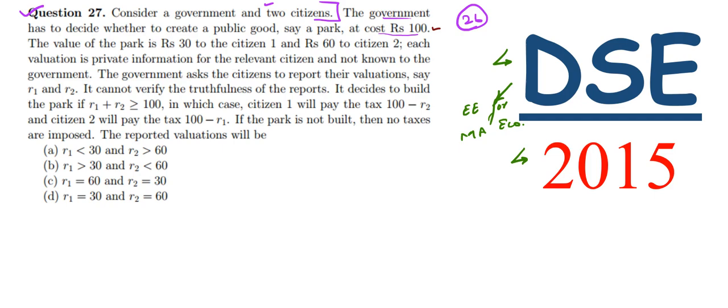The value of the park is rupees 30 to citizen 1 and rupees 60 to citizen 2. Each valuation is private information for the relevant citizen and not known to the government. The government doesn't know these values, but each citizen knows their own valuation.